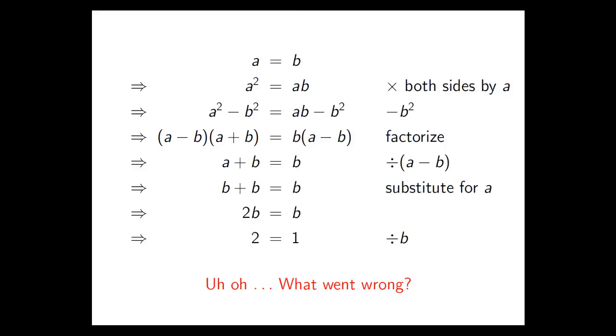And in fact, one of the steps I took in that proof was illegal, incorrect. Have a bit of a think for a moment about which step may be the culprit. Well, the offending step in this process is that one, the division by a minus b. You've probably done division by expressions like that several times already in your mathematical career. Why is this one wrong?